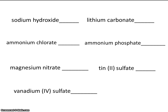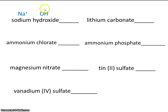In this video, we'll be writing formulas for ionic compounds that contain polyatomic ions. Sodium is a metal in group 1, so it always has a charge of plus 1. Hydroxide is not an element on the periodic table — it's a polyatomic ion located on the back of your periodic table and has a charge of minus 1. So we need 1 sodium to balance 1 hydroxide, and the formula is simply NaOH.